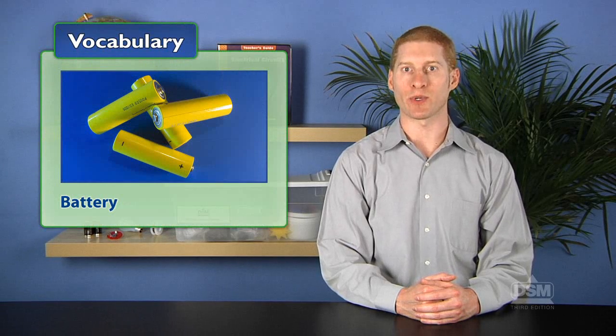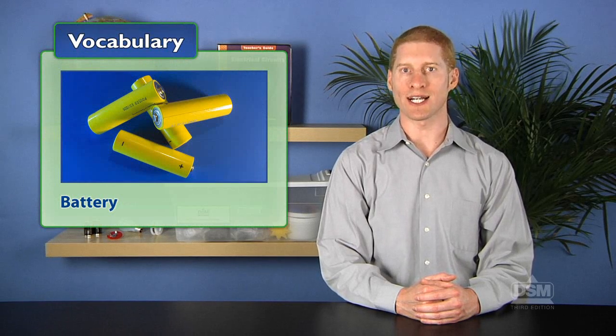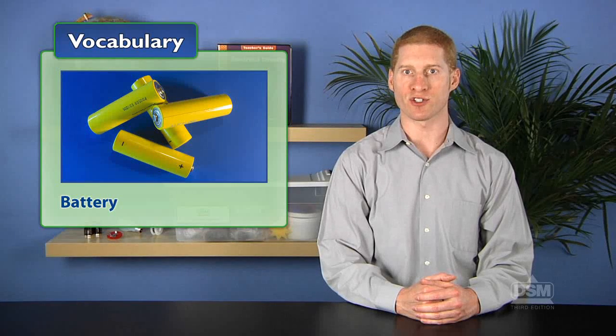Then, explain that in this activity, students will create and test different ways to make the bulb glow. Inform the class that a battery holds chemicals that react with each other, which causes electrons or tiny bits of charged matter to move.